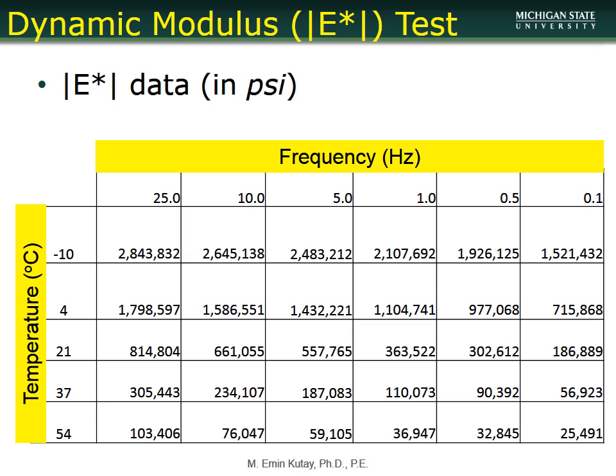Looking at raw E-star data from a dynamic modulus test, frequency is in the columns and temperature is in the rows. At the upper left — highest frequency, lowest temperature — you have 2.8 million psi. At the lower right corner — 54 degrees Celsius, 0.1 Hz — you see only about 25,000 psi. That's a very big difference in dynamic modulus.